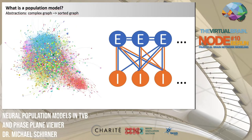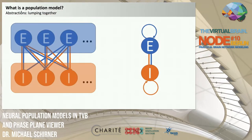Together with the parcellation, this allows us to generate a brain network model specified by the weights of connection strengths between different brain regions and their distances, which gives an estimate of the time delay of interaction. Population models aim to reduce the complexity of such a network by employing abstractions — for example, by distinguishing only between excitatory and inhibitory cells and expressing the dynamics of each group using a simplified model describing the average or mean behavior.